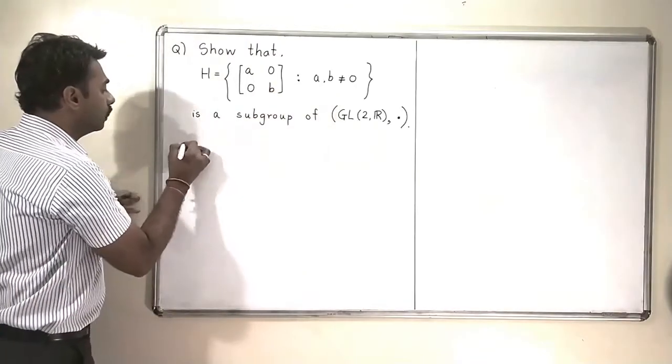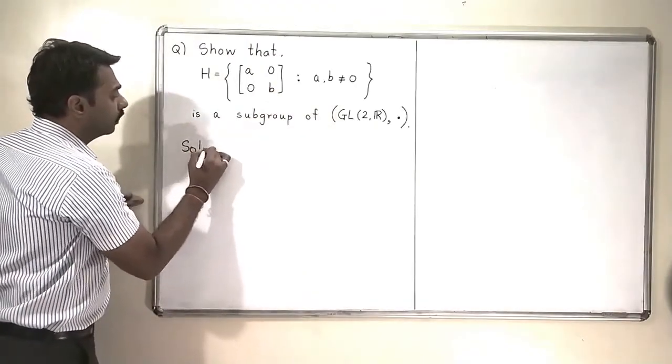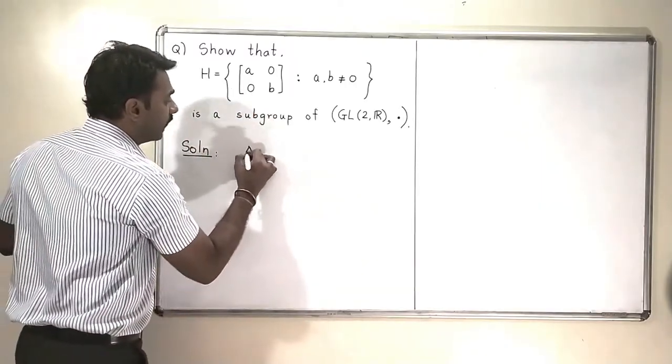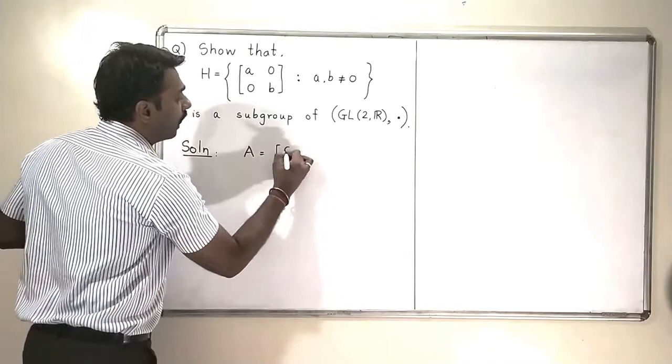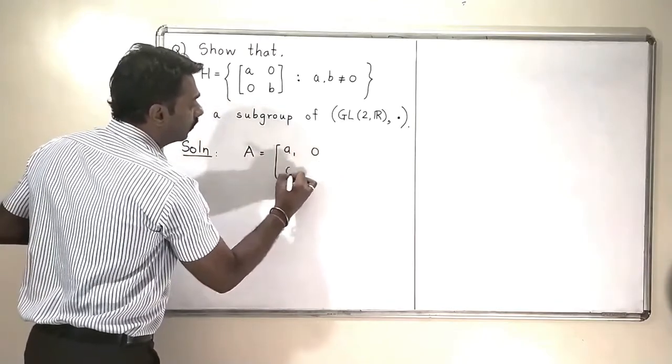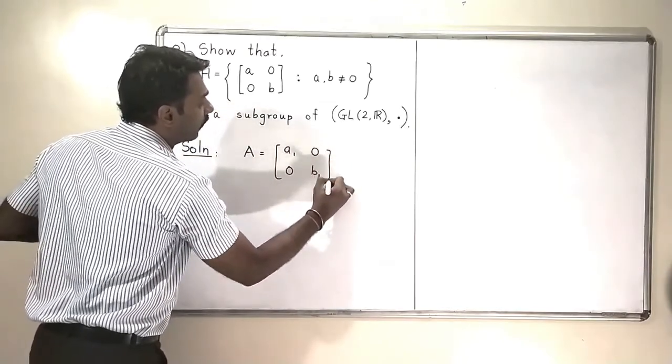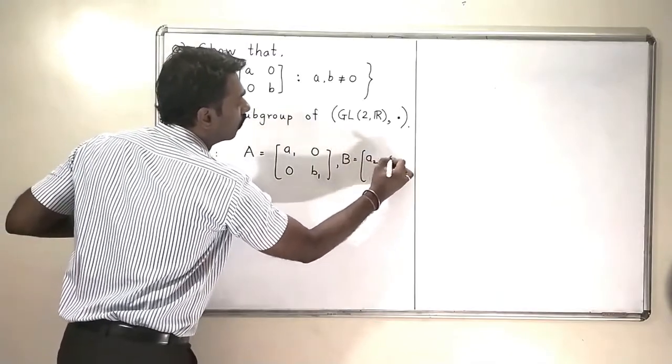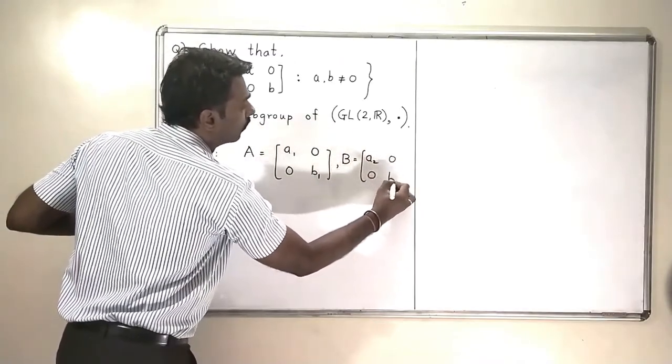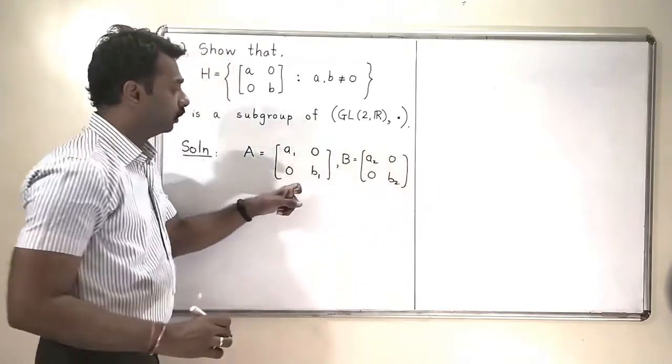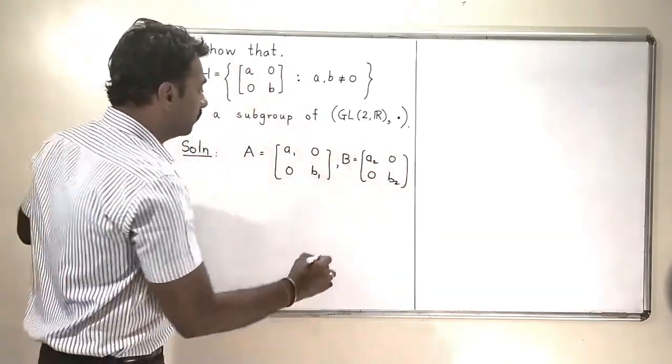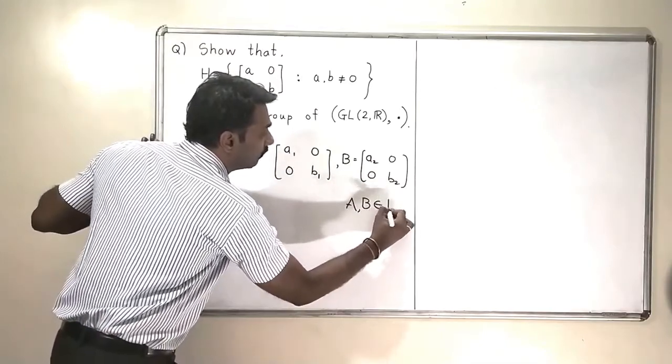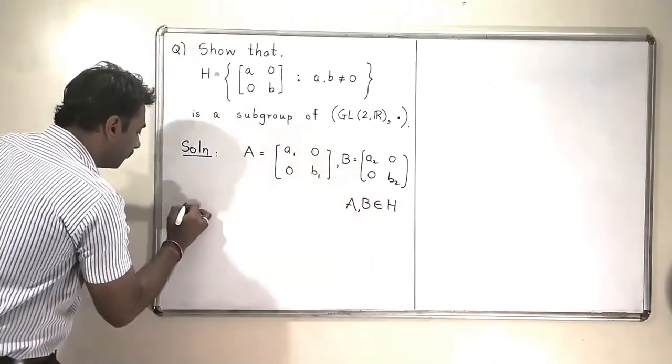So, how do we show this? We will take two elements of this set. Let us take a matrix A which is [A1, 0; 0, B1] and another matrix B which is [A2, 0; 0, B2]. Both these matrices are in the set H, means the entries A1, B1, A2,